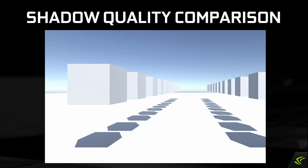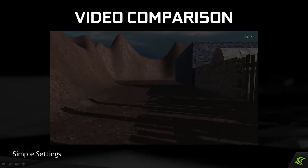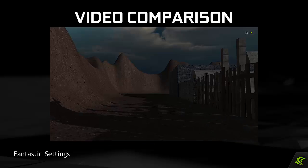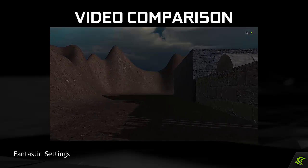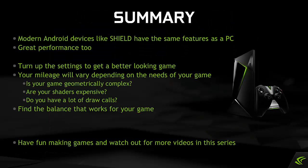Now let's look at some real-time examples. In summary, modern Android devices like the Shield have similar features to a PC and come with great performance. Turn up the settings in Unity to get a better looking game. Your mileage will vary depending on your game's needs — geometric complexity, expensive shaders, or high draw call counts may affect performance. You'll have to find the balance that works best for your game, but you can get great looking visuals out of Unity fairly easily just by choosing appropriate settings. Have fun making games, and watch out for more videos in this series.